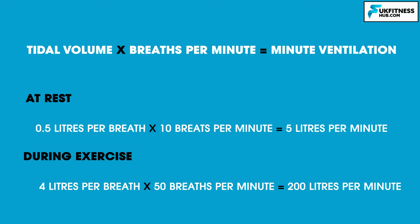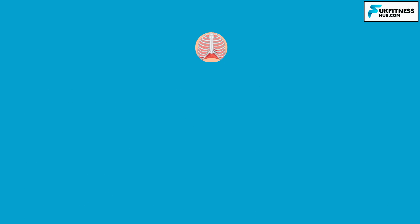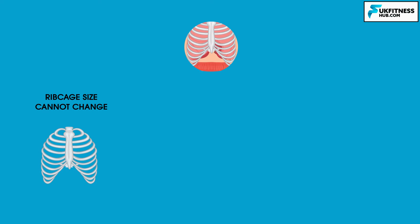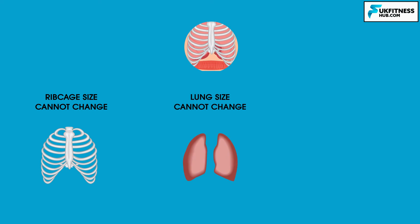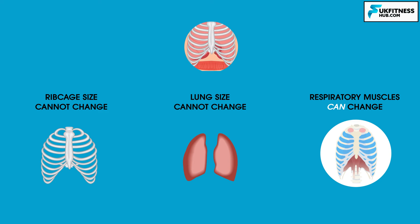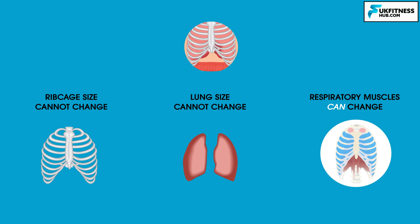This is a significant increase on the minute volume of 5 litres at rest. Lung function can adapt with exercise, but an individual's capacity is limited by the size of their ribcage. Because this cannot increase, the size of the lungs cannot increase. However, the respiratory muscles will adapt like any other skeletal muscles, becoming larger and stronger. Thus, the lungs can become more efficient and move more air in and out with each breath.